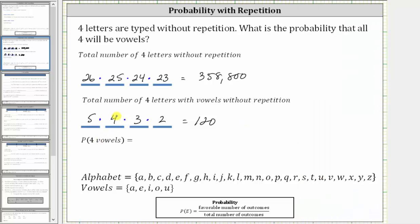The probability of typing four vowels when four letters are typed without repetition is equal to 120 divided by 358,800.